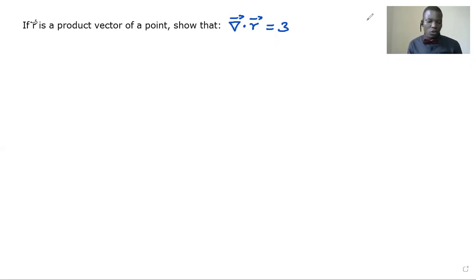Okay, so if r, which is a vector position r, is a product vector of a point, show that del dot r vector equal to three.